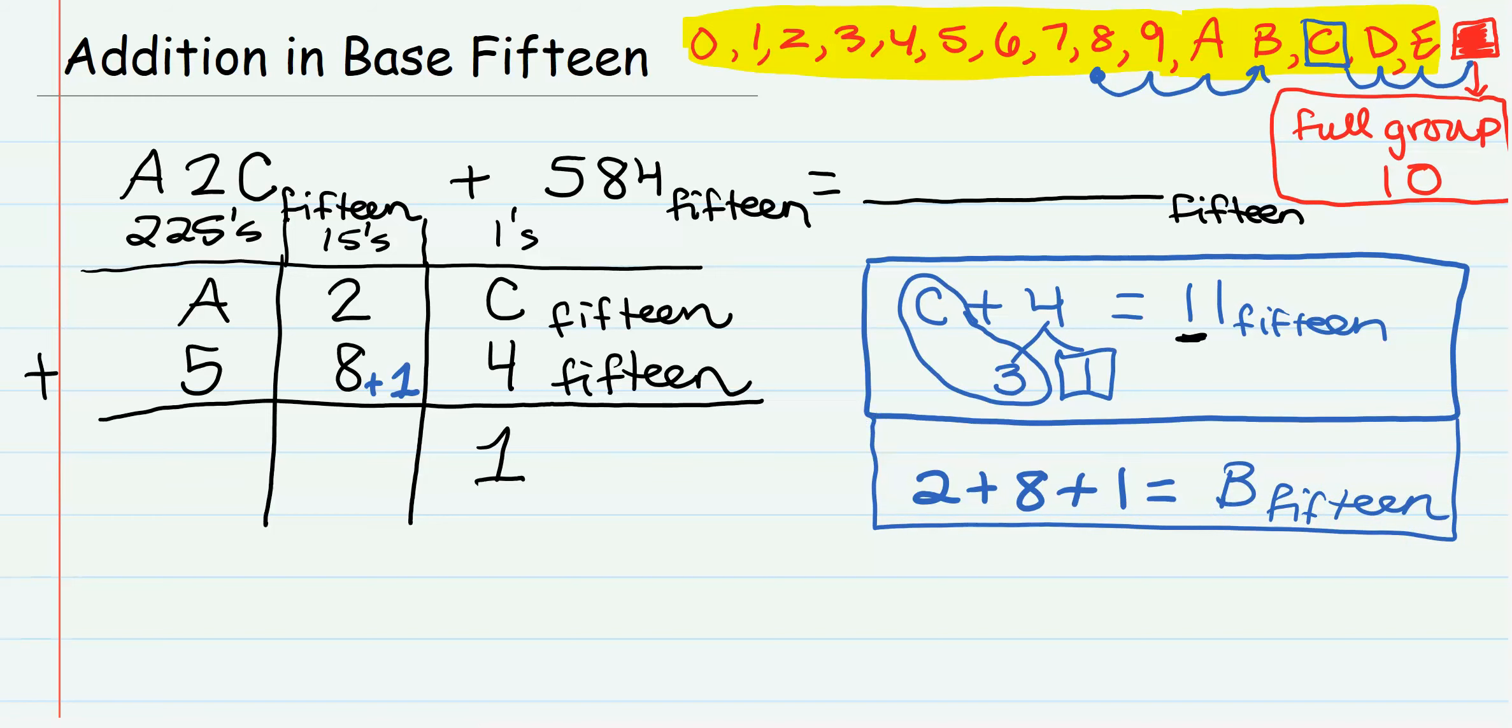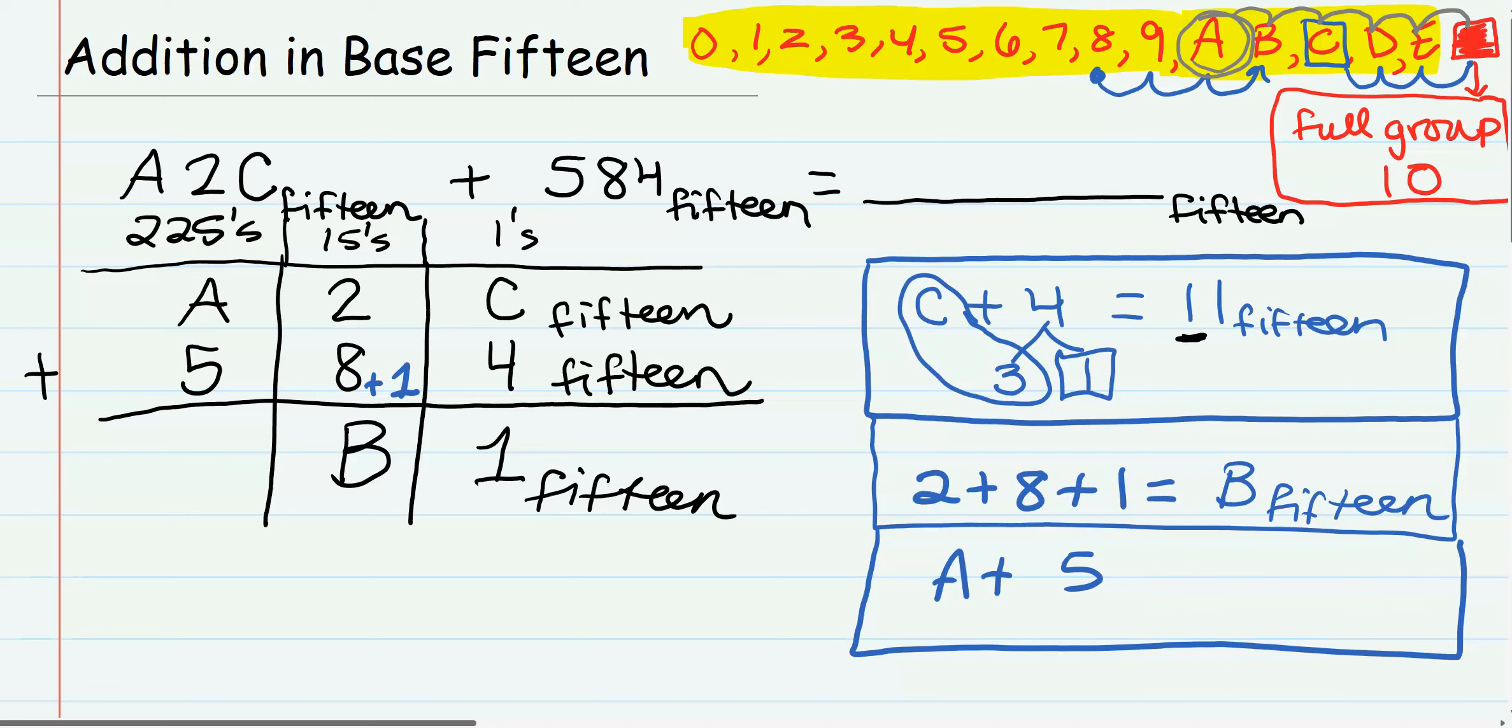Lastly, we have, for the third place value, A plus 5. Let's take a look at A. A is right here. How many do we need to make a full group of 15? I would need 1, 2, 3, 4, 5. I would need 5 to make a full group of 15. Luckily, this is 5.